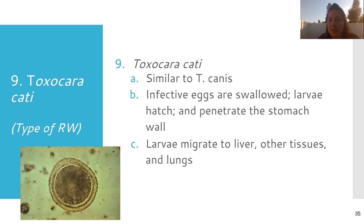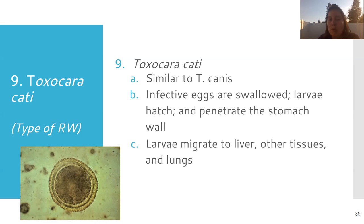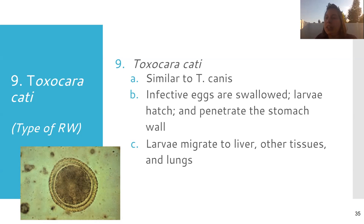Toxocara cati is similar to the canis. The eggs are swallowed by the animal, the larvae hatch and penetrate the stomach wall — that does not sound like fun. The larvae then migrate to the liver and can end up going into other tissues, making their way to the lungs. This makes them really difficult to treat because if they're migrating all throughout the body, it's hard to get rid of them.